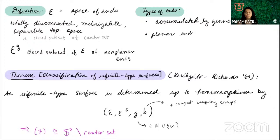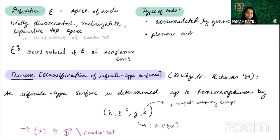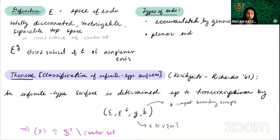It's hard to have a sweeping theorem saying all infinite type surfaces have a certain property. When you see people restricting to specific types, it's not because they can't prove the theorem — it's because the end space structure often requires a completely different approach. That's a caveat I want to put out there, especially for the young people in the audience working in this area: it's totally normal to have a result with some restrictions.